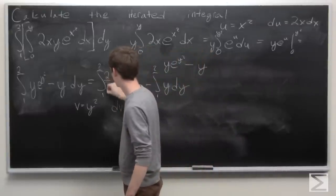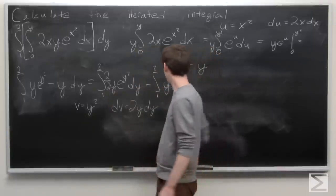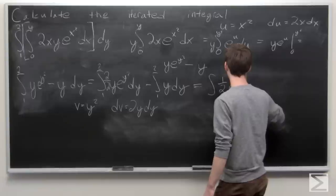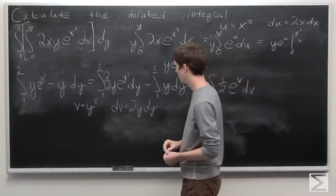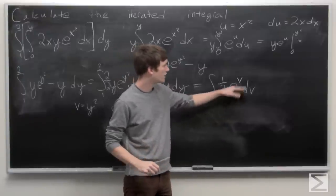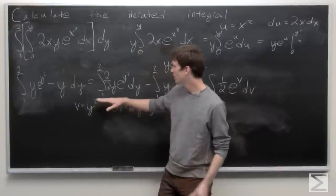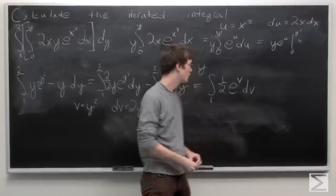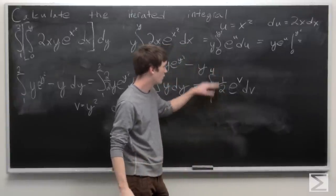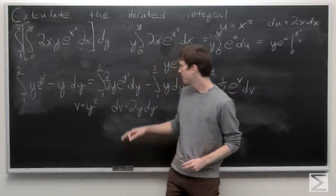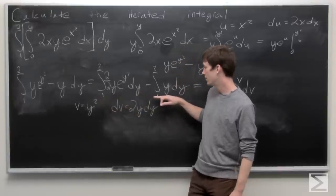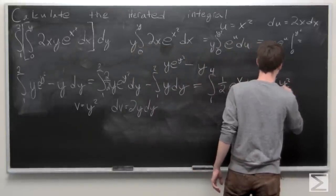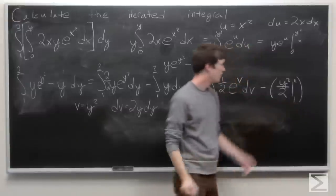We insert a factor of 2 over 2, giving us one half times the integral of e to the v dv. We change the limits of integration: when y is 1, v is 1; when y is 2, v is 4. So our integral becomes from 1 to 4 of one half e to the v dv. The integral of y is y squared over 2, still evaluated from 1 to 2.